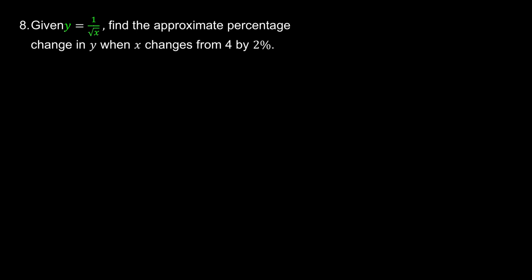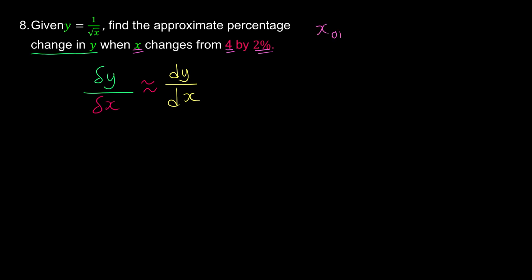Given y is equal to 1 over square root of x, find the approximate percentage change in y when x changes from 4 by 2%. Since they ask for the approximate change, we use differentiation as our approximation tool: delta y over delta x approximated by dy over dx. From the question, the original x is 4, and delta x is 2% of 4, which is 2/100 times 4, giving 0.08.